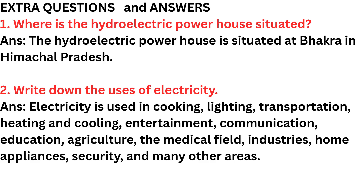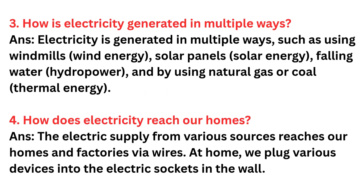Now we will see some extra questions and answers. Question 1: Where is the hydroelectric powerhouse situated? Answer: The hydroelectric powerhouse is situated in Bakra in Himachal Pradesh. Question 2: Write down the uses of electricity. Answer: Electricity is used in lighting, cooking, transportation, heating and cooling, entertainment, communication, education, agriculture, medical field, industry, home appliances, security, and many other areas. Question 3: How is electricity generated in multiple ways? Answer: Using windmills (wind energy), solar panels (solar energy), falling water (hydropower), and natural gas or coal (thermal energy).